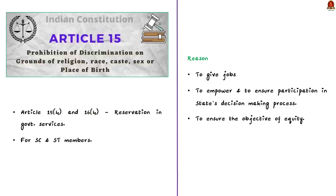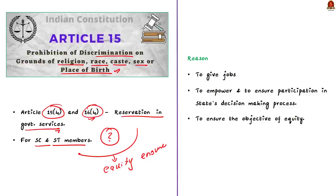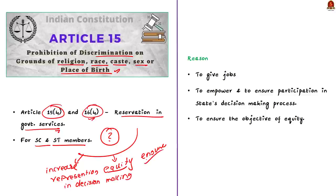Article 15 talks about prohibition of discrimination mainly on the grounds of religion, race, caste, sex, or place of birth. But Article 15 clause 4 and Article 16 clause 4 enable the state and central government to reserve seats in government services for members of scheduled caste and scheduled tribes. The main objective of providing reservation is not only to give jobs but to empower these communities and ensure their participation in the decision-making process of the state, and thereby ensure the objective of equity.